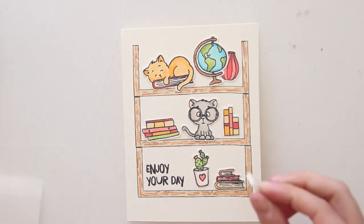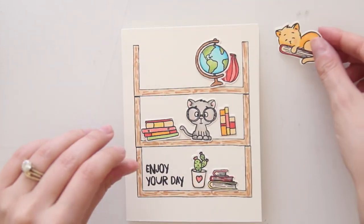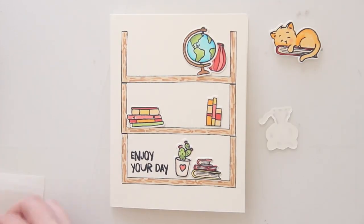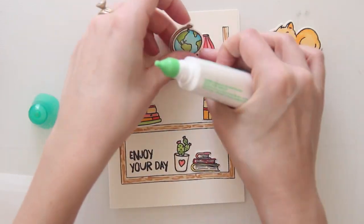Now I'm just taking some foam tape on the two cats that I know I want to pop up as well as the globe, and then using my Tombow mono multi glue to adhere down all of the other pieces straight to the card base.